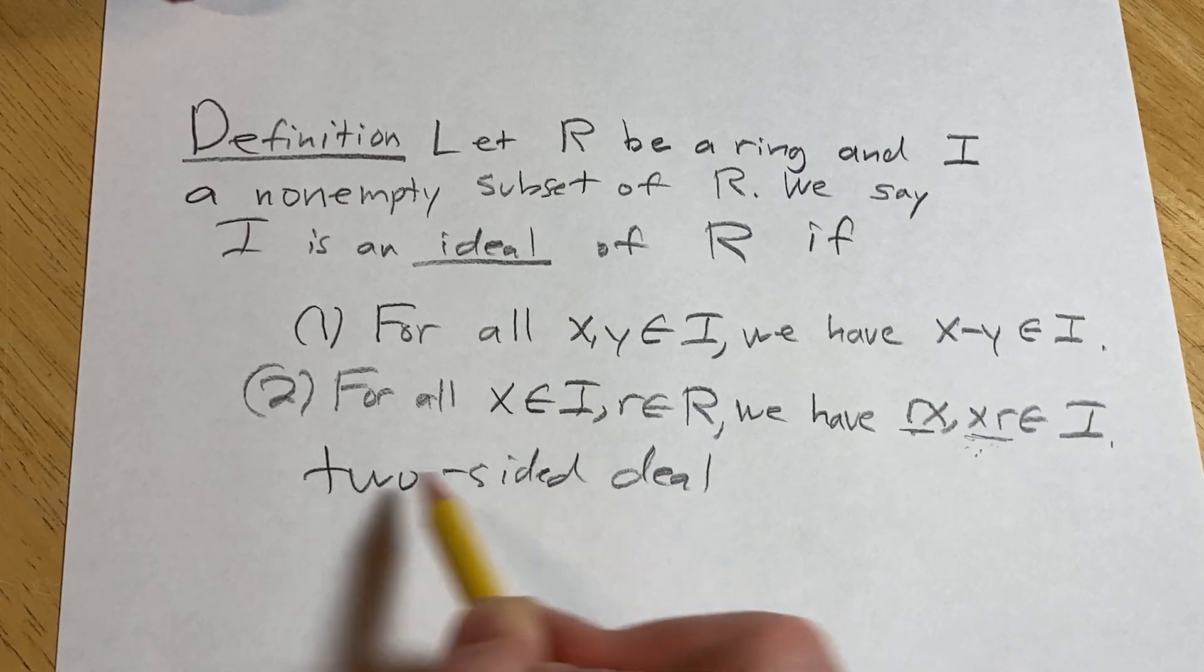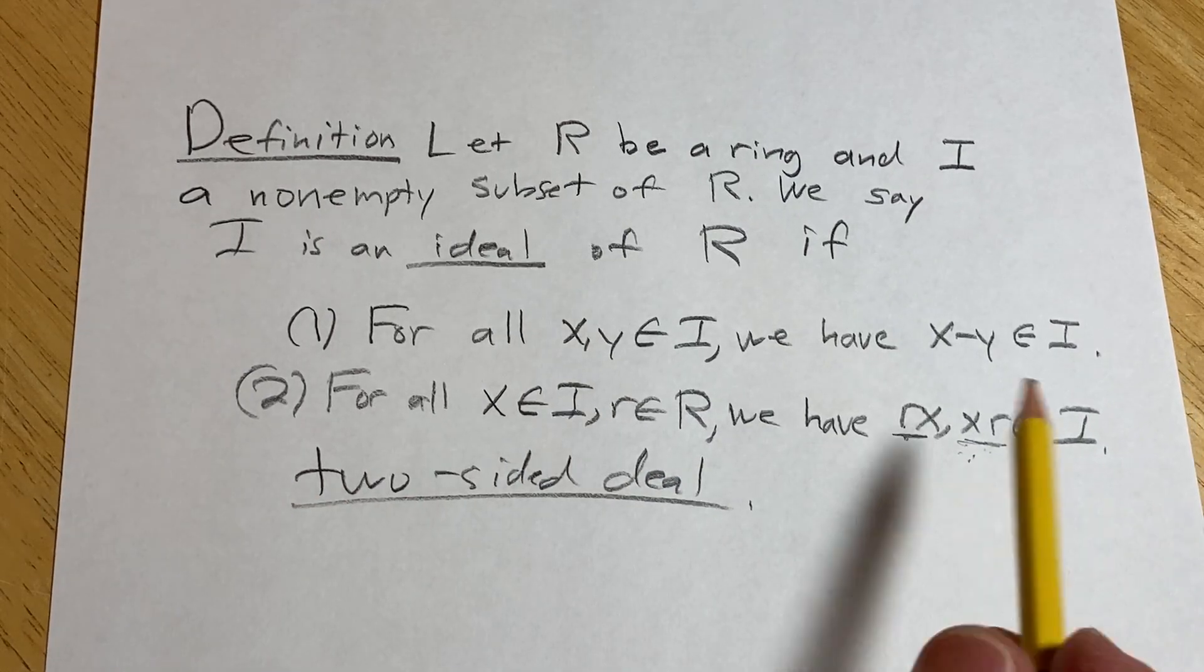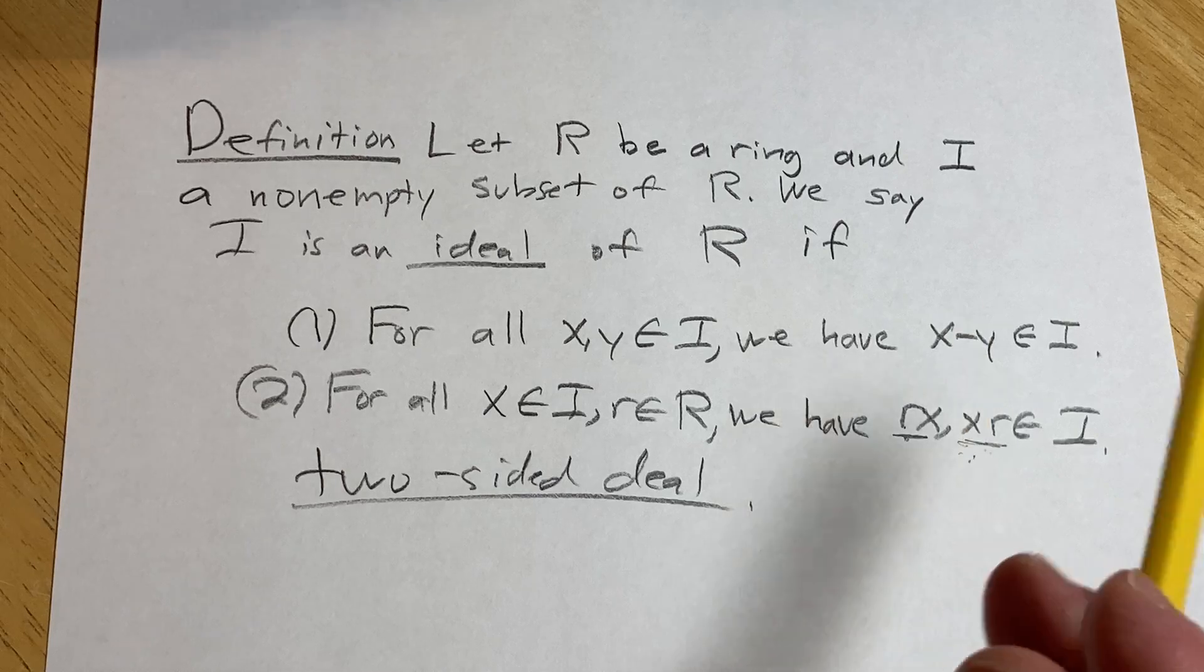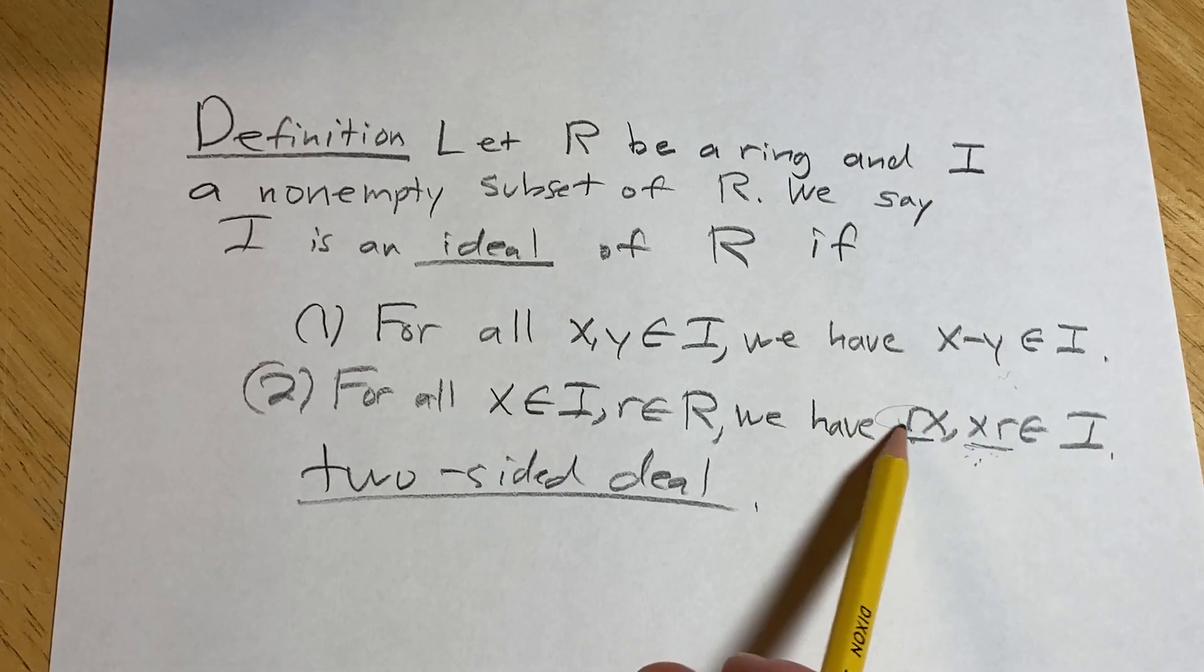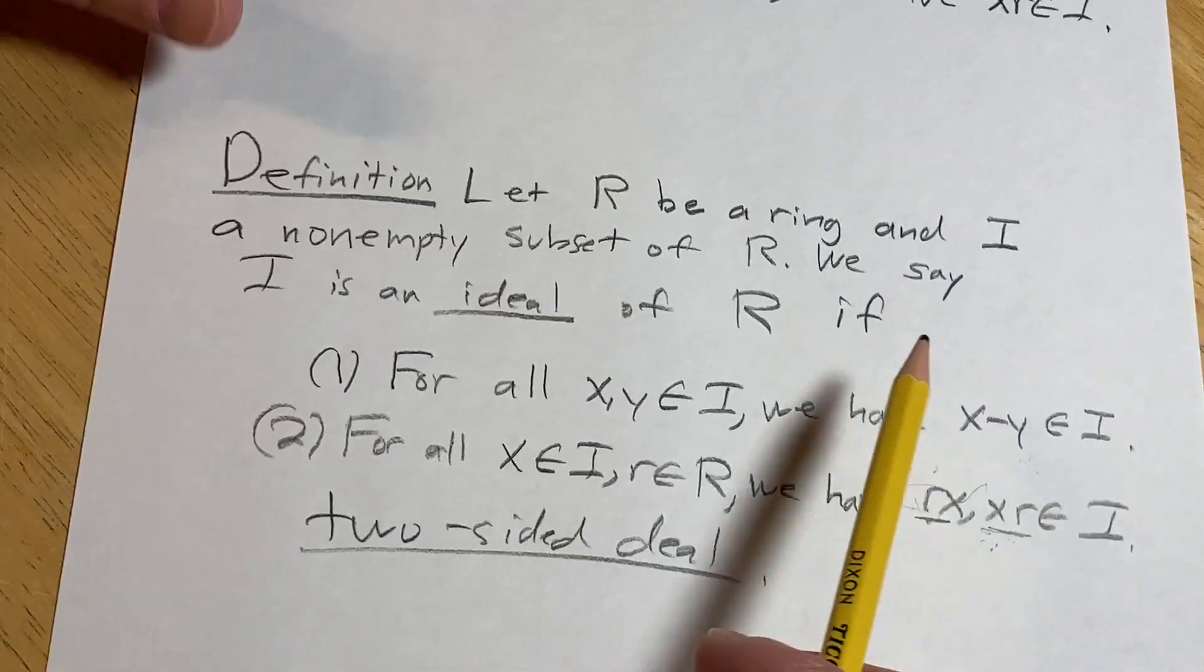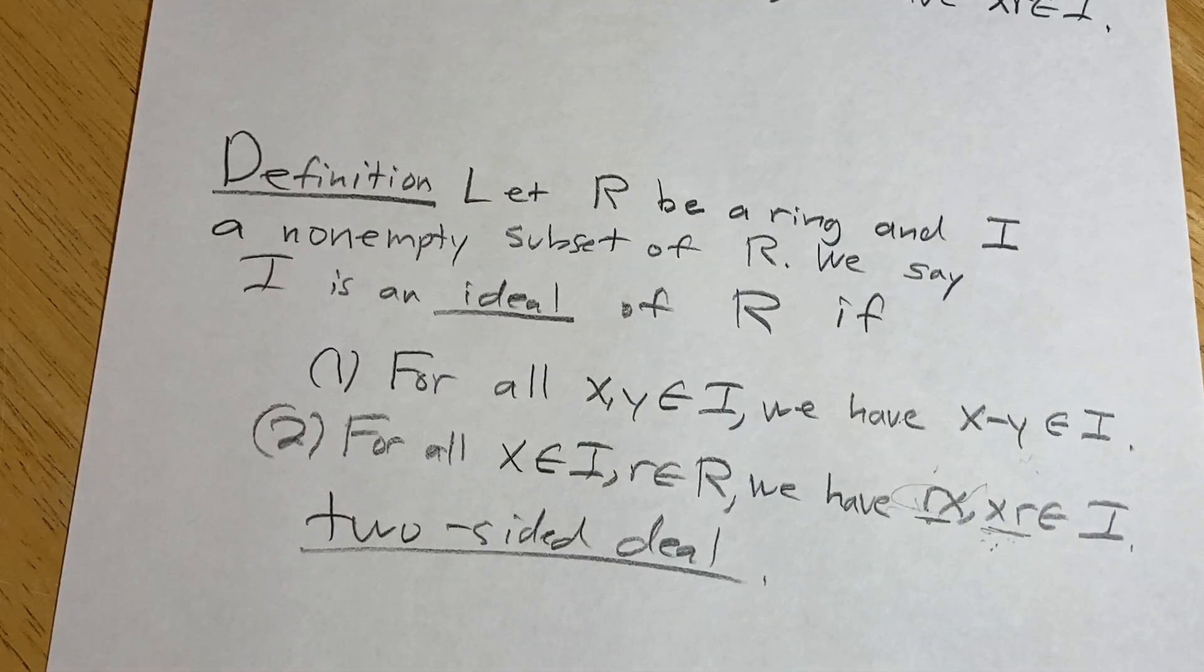Obviously, if we're dealing with commutative rings, it's a non-issue. You just prove one. Usually you just prove this one, because it just makes more sense to me. It's typically what you do in a commutative ring, because you don't have to worry, because they're all two-sided.